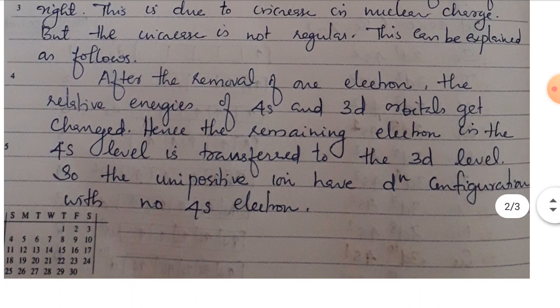After the removal of one electron, the relative energies of 4s and 3d orbitals get changed. Hence the remaining electron in the 4s level is transferred to the 3d level. So the unipositive ion has a dn configuration with no 4s electron.